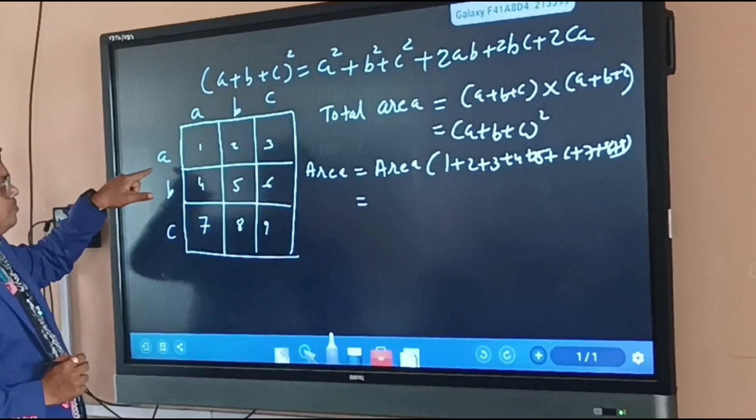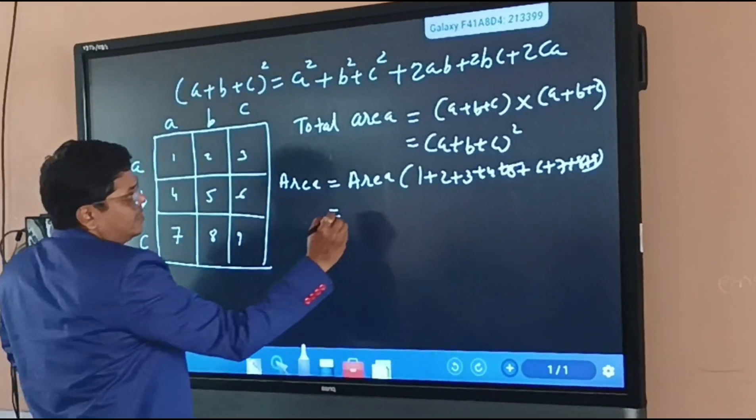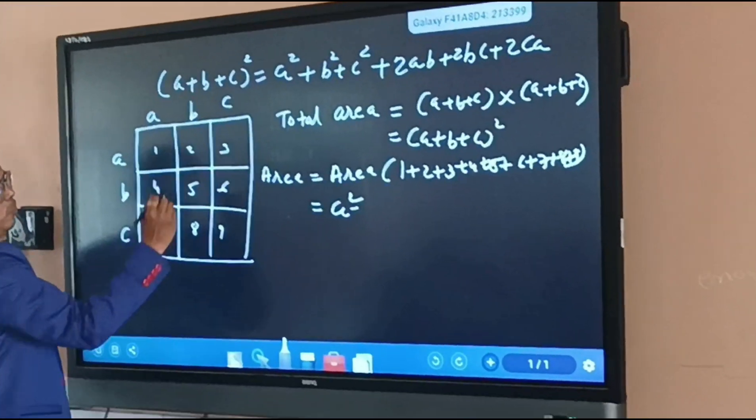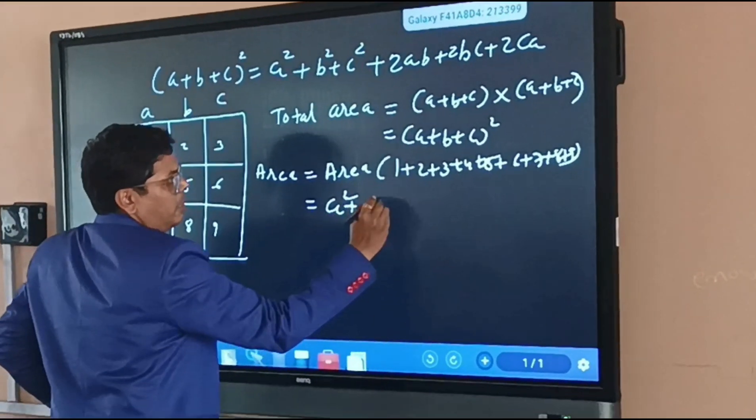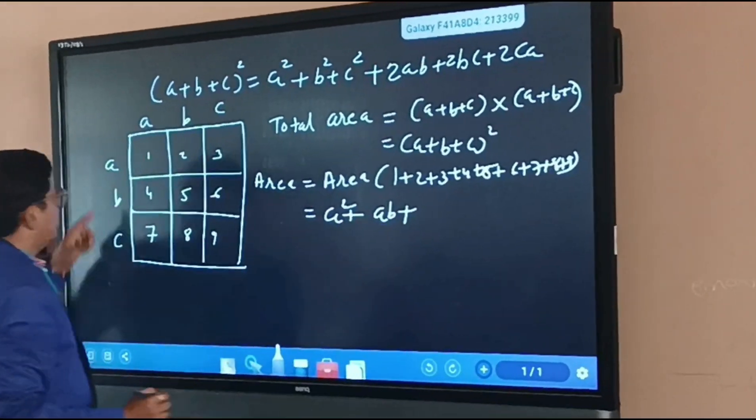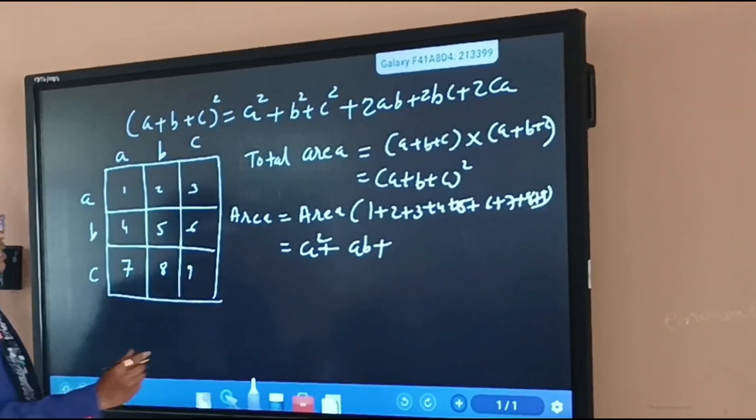First part, a into a, that is a squared. Second part, that is a into b, that is ab. Third part, it is a into c, that is ac.